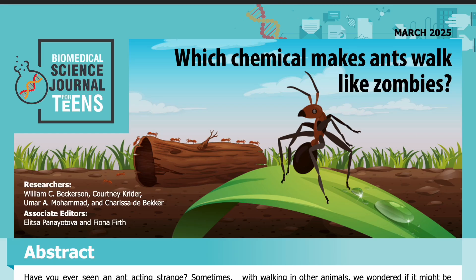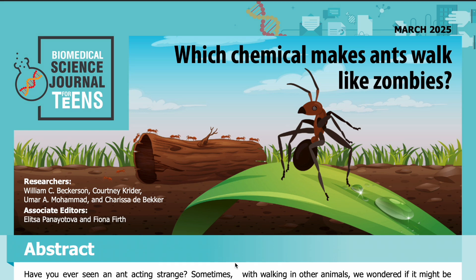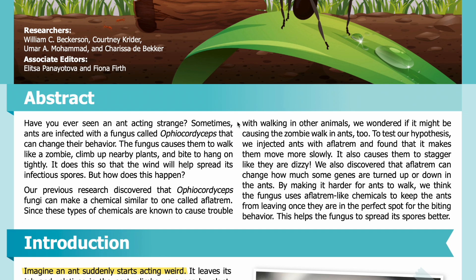Science Journal for Kids and Teens presents: 'Which chemical makes ants walk like zombies?' Read by Miranda Wilson. Abstract: Have you ever seen an ant acting strange? Sometimes ants are infected with a fungus called Ophiocordyceps that can change their behavior. The fungus causes them to walk like a zombie, climb up nearby plants, and bite to hang on tightly. It does this so that the wind will help spread its infectious spores.